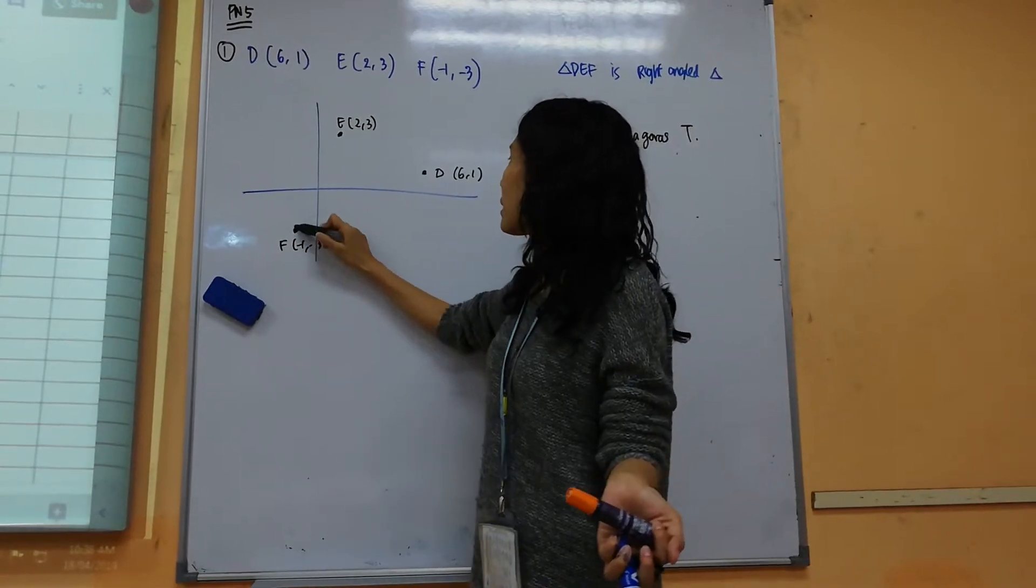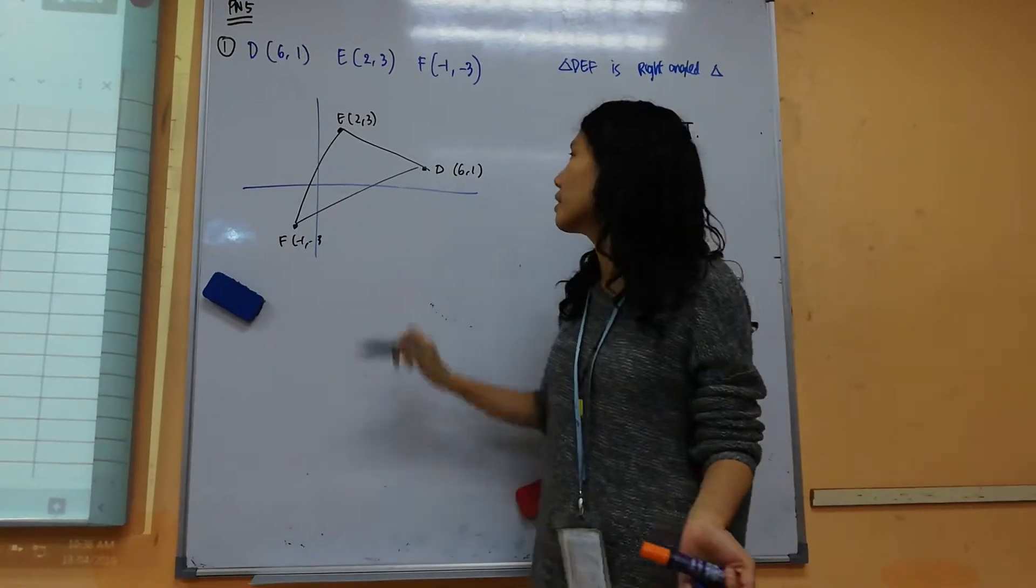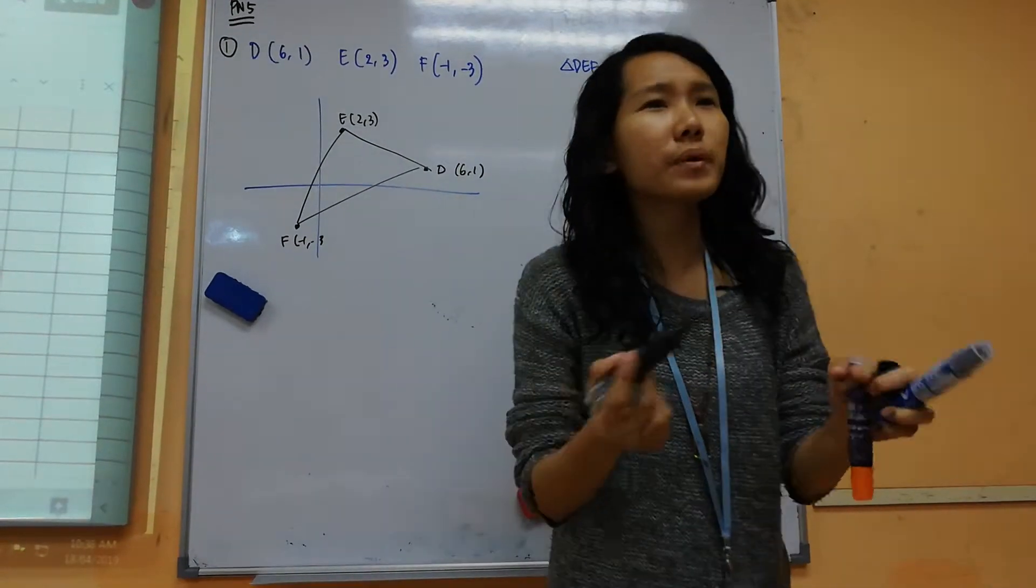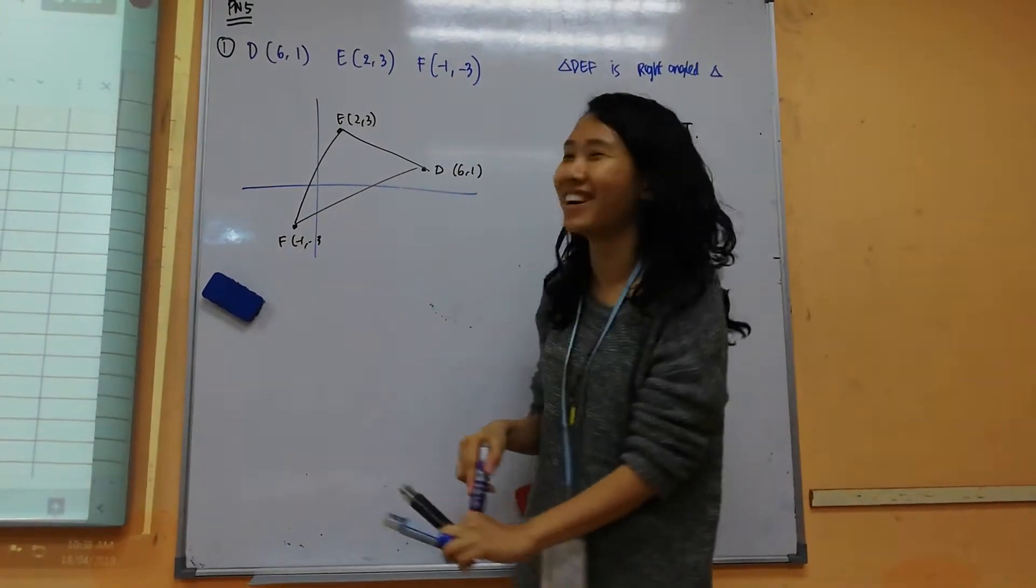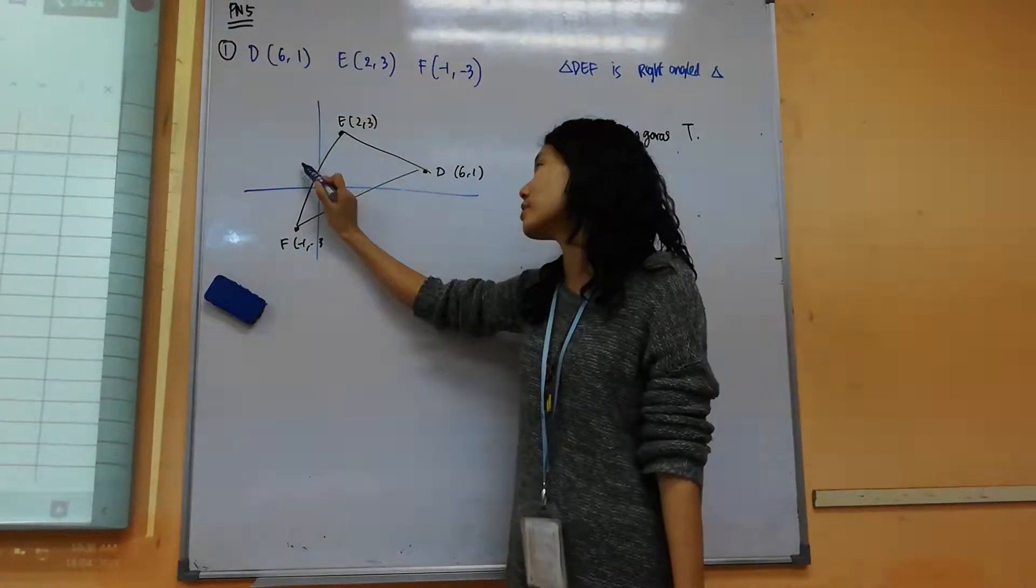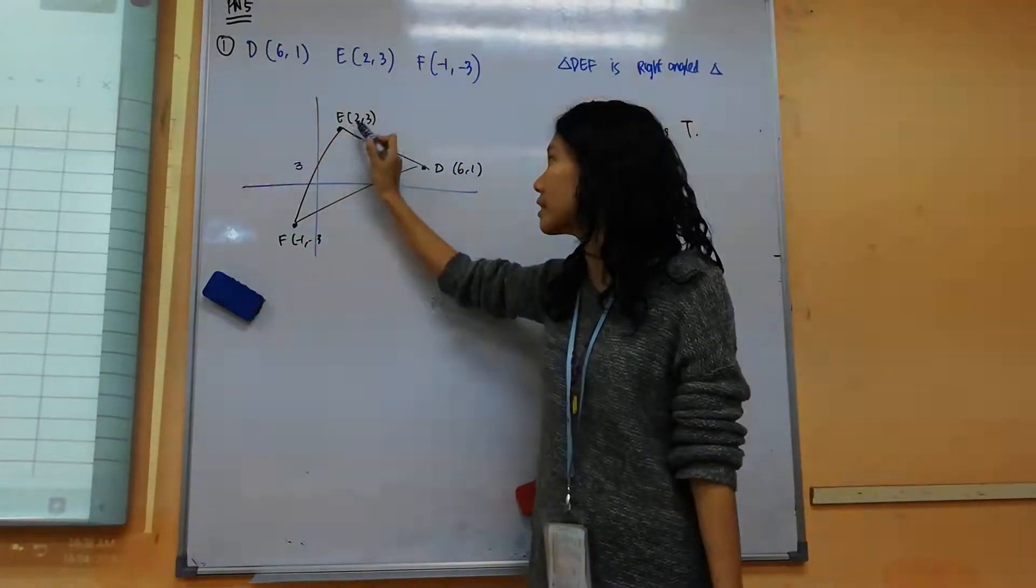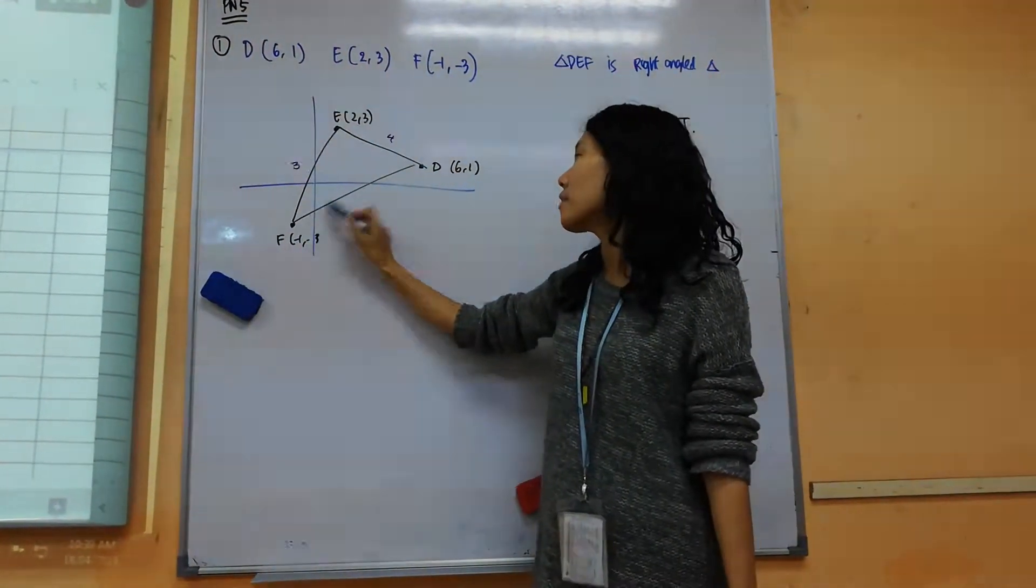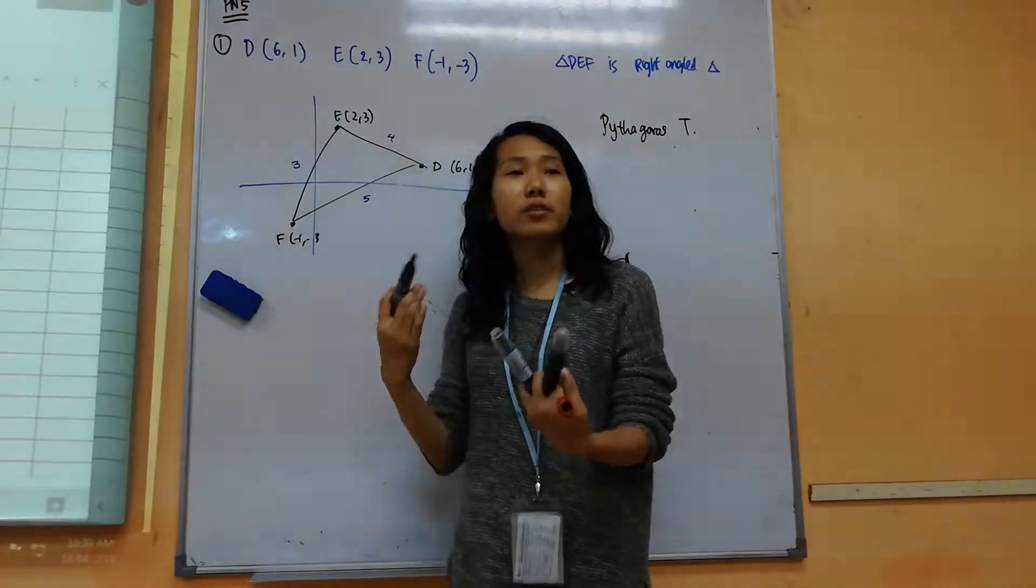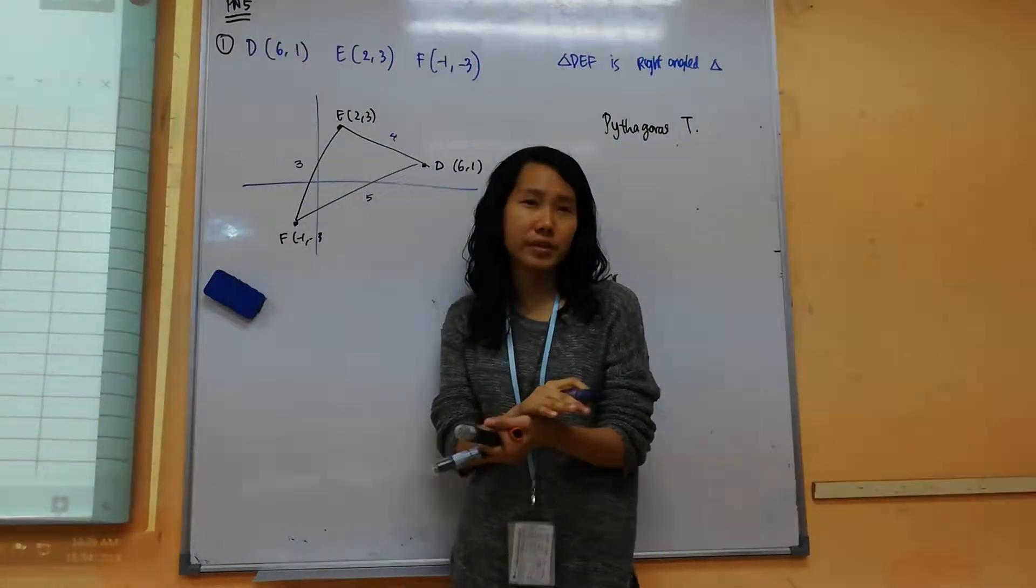So I'm going to get this triangle. Doesn't look like a right angle triangle at the moment, right? So let's say I tell you this is 3 units long from E to F, and E to D is 4 units long, F to D is 5 units long. So let's see whether it fits Pythagoras theorem.